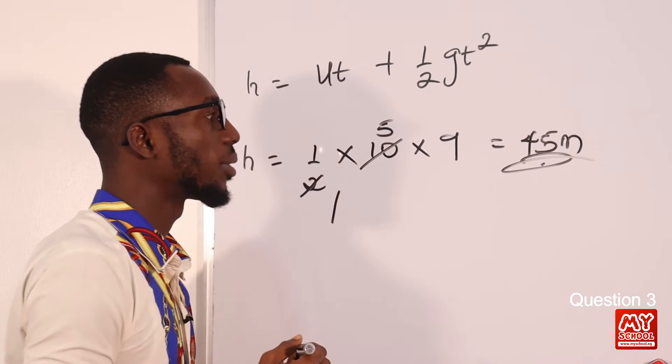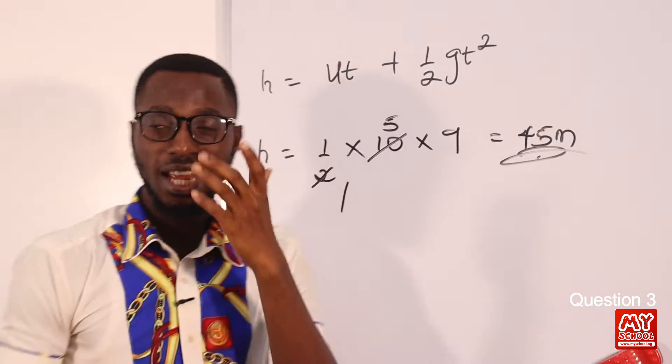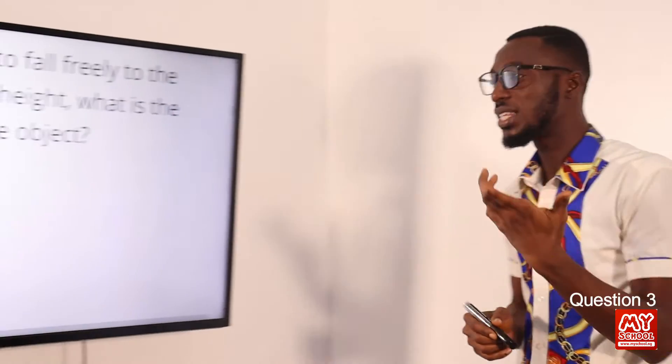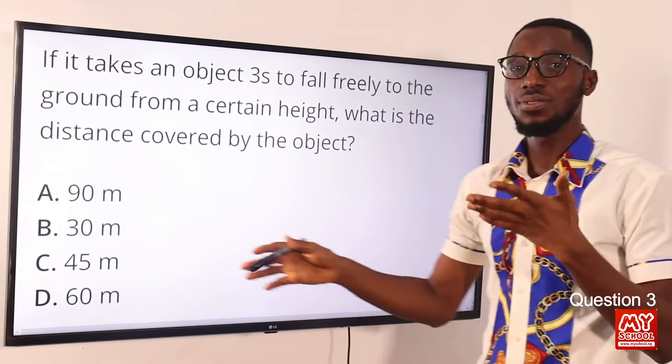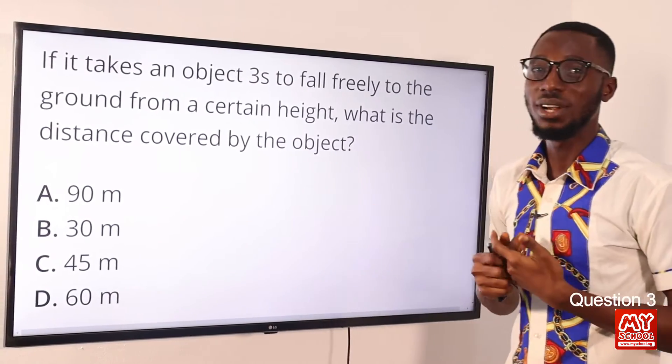So the distance we are looking at is 45 meters. So let's go back to the screen to point out 45 meters. That is found in option C. So option C is the correct option.